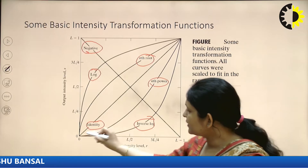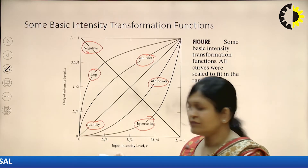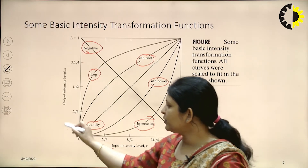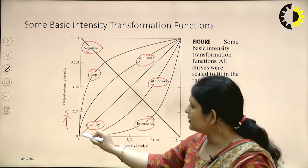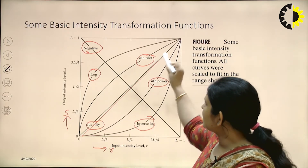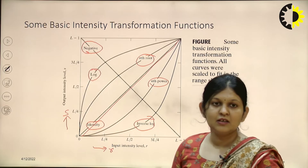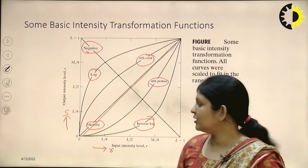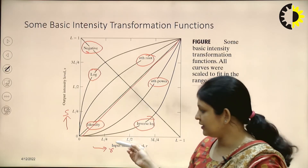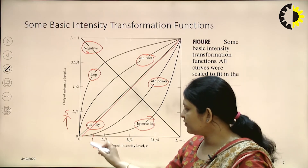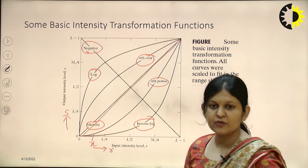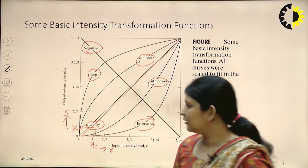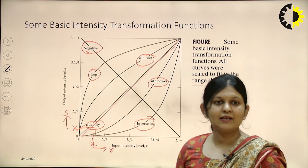First, let's see the identity function. Identity means whatever the input value r is, the same will be the output s. If we see the slope of this line, its angle is 45 degrees and the slope is 1 — if r equals x, then s also equals x. This is the identity function.